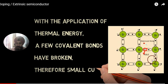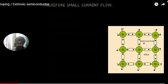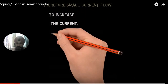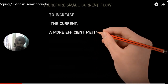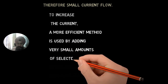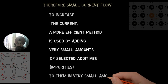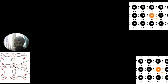This electron-hole pair contributes to electrical conduction when a potential is applied to this semiconductor. This is an intrinsic semiconductor, and conductivity occurs only because of thermal energy generating carriers. To increase the current or conductivity, a more efficient method is used — adding a very small amount of impurity to the pure semiconductor.